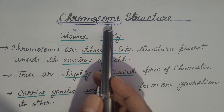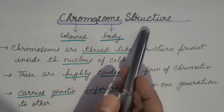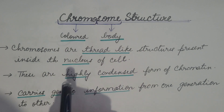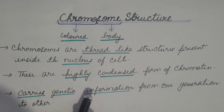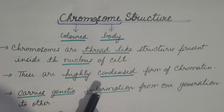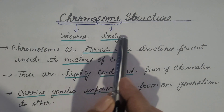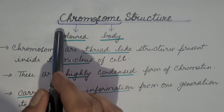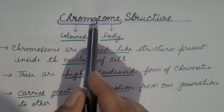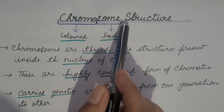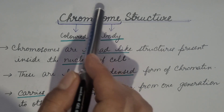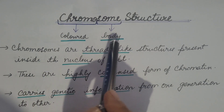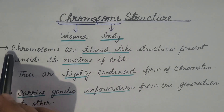In this video we are going to discuss chromosome structure. This topic is relevant for both CSIR NET exams and NEET exams, so please share it with NEET aspirants too. The word 'chromosome' is made up of two words: 'chromo' means colored and 'soma' means body, so the literal meaning of chromosome is 'colored body.'